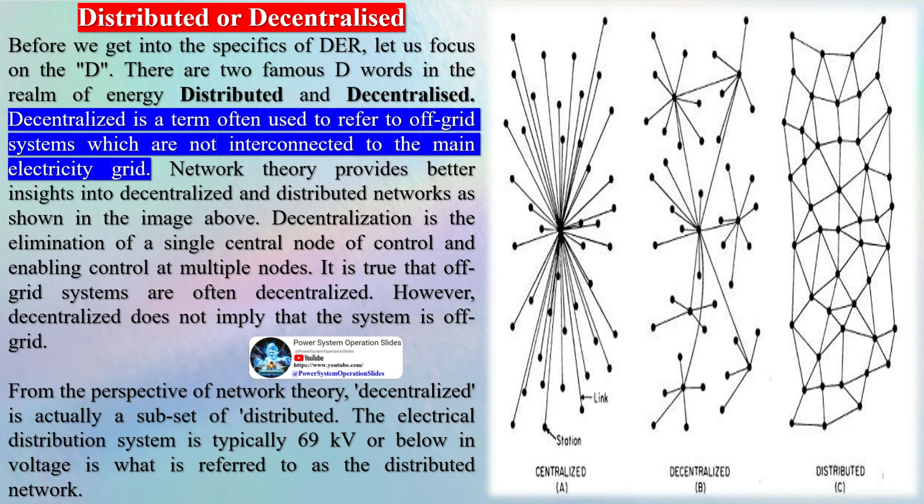A few types of distributed energy resources include: solar photovoltaic (PV), wind turbines, batteries, fuel cells, combined heat and power (CHP), microgrids, and biomass.